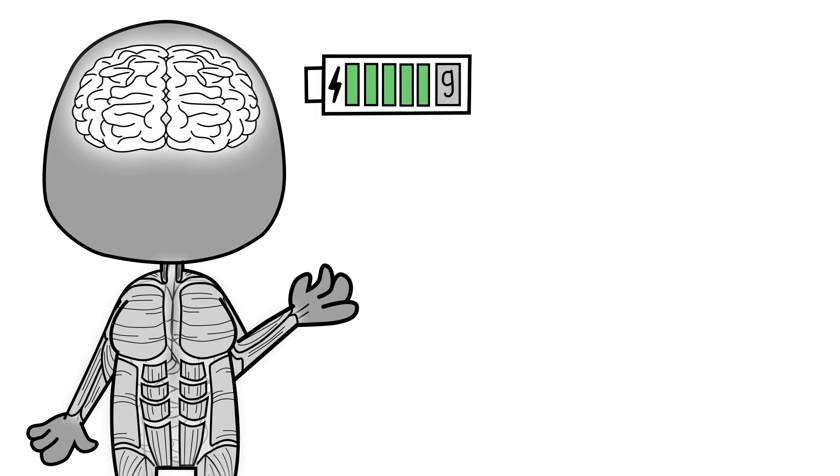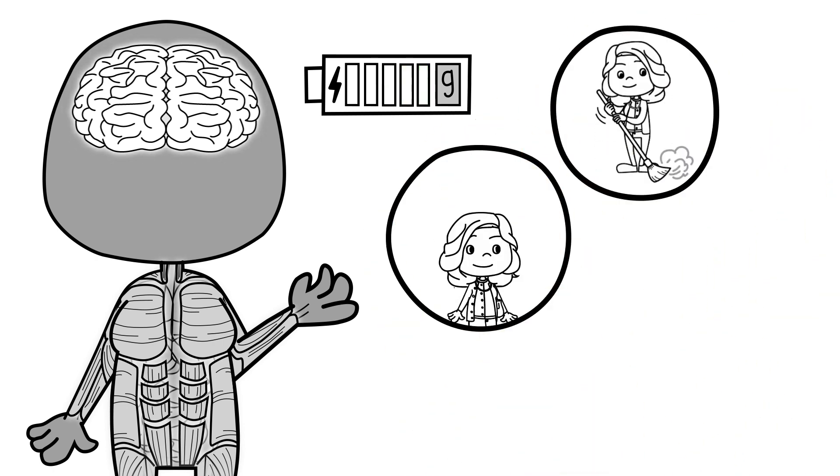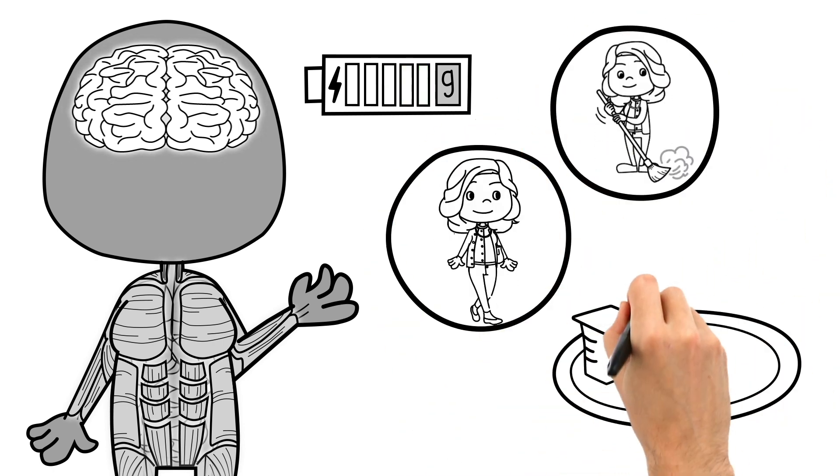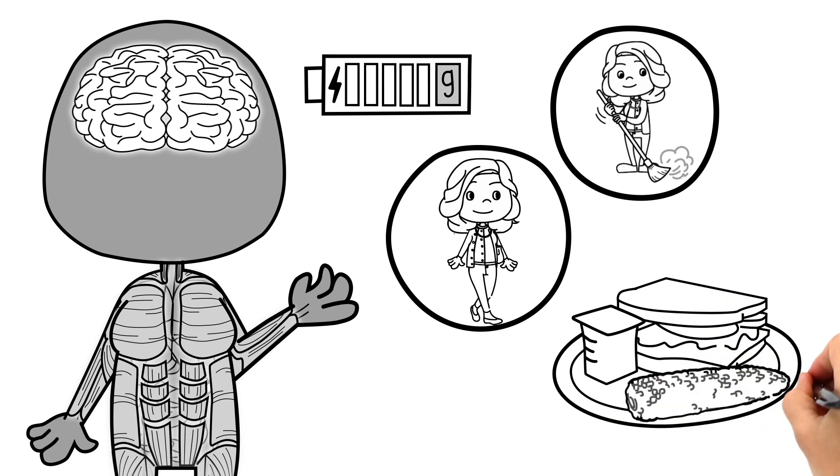Glucose is slowly used up for energy as Sally goes about her daily activities, like cleaning and walking, and needs to be topped up from the food she eats at her next meal.